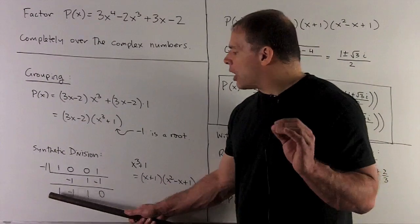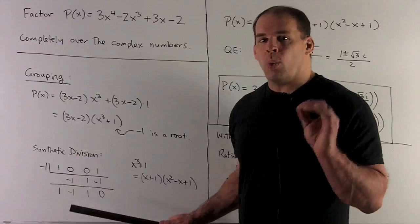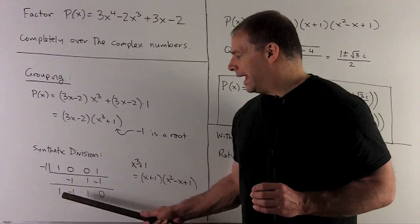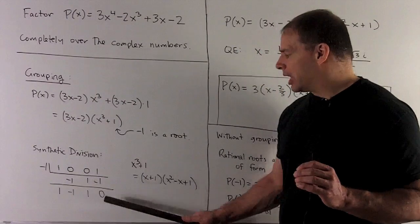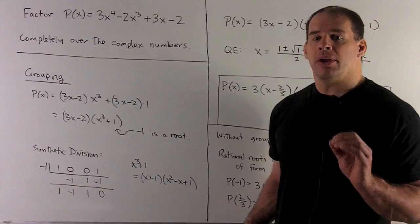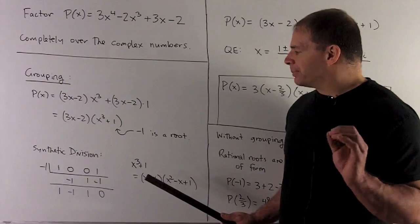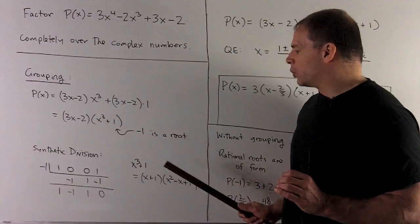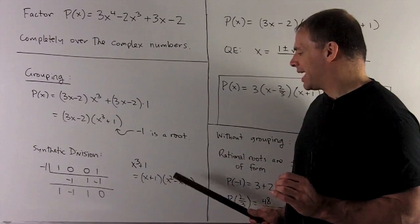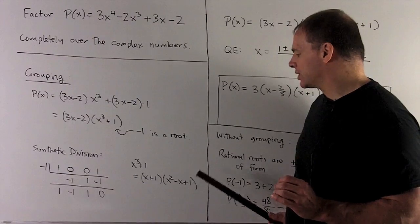And then the way I go along the bottom is, we're going to start one degree less than the original. So this is going to be x^2 - x + 1, plus the remainder. But the remainder is 0, so we can ignore it. So what I just pulled out of this synthetic division is x^3 + 1 = (x + 1)(x^2 - x + 1).